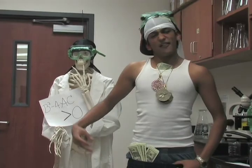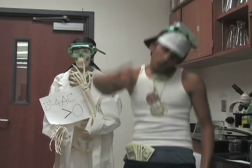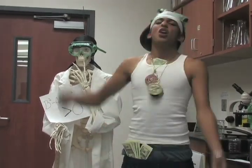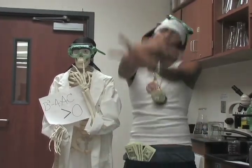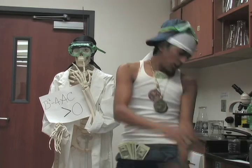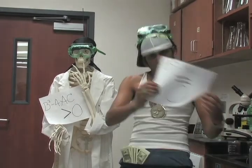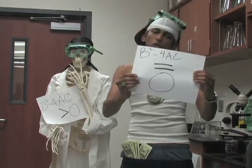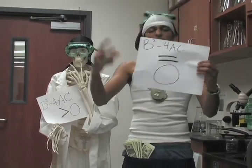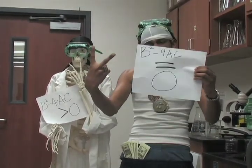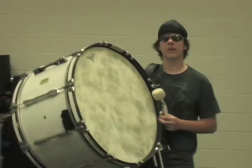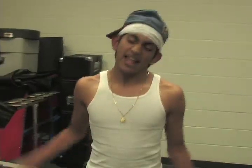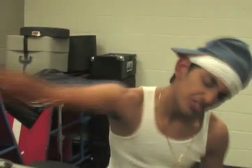If the discriminant formula is greater than zero, you know it's a hyperbola. But if the formula equals zero, it's a parabola. Identifying conics — it's easy.